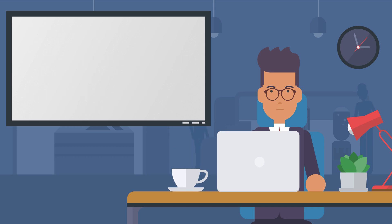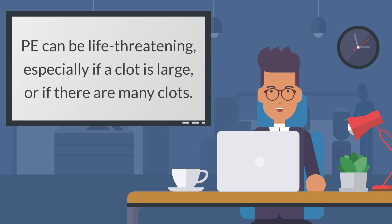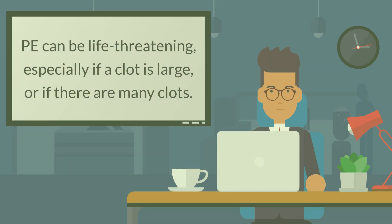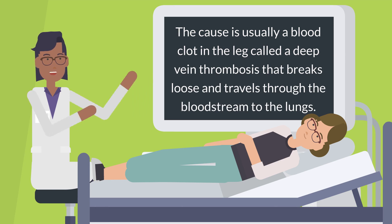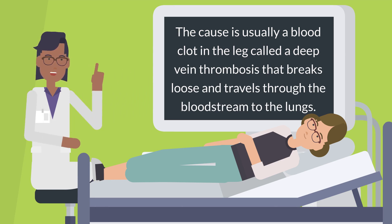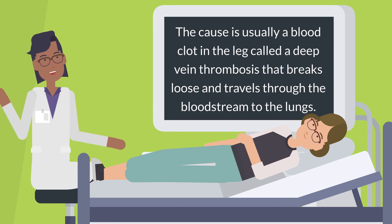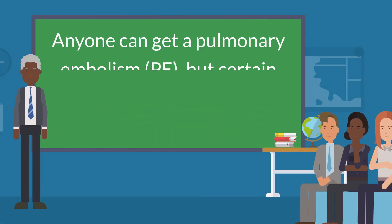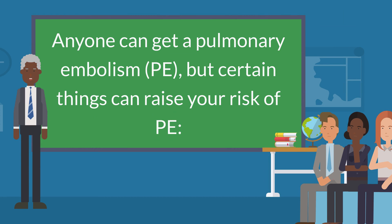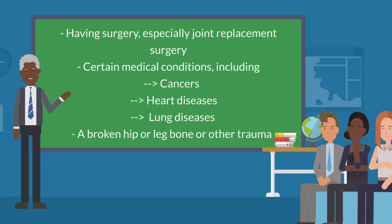PE can be life-threatening, especially if a clot is large or if there are many clots. The cause is usually a blood clot in the leg called a deep vein thrombosis that breaks loose and travels through the bloodstream to the lungs. Anyone can get a pulmonary embolism, but certain things can raise your risk.